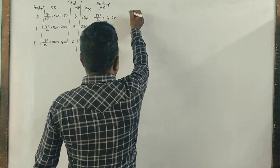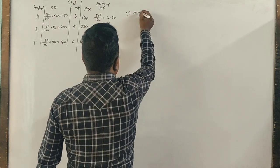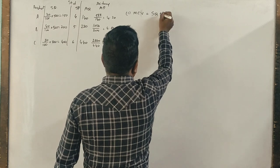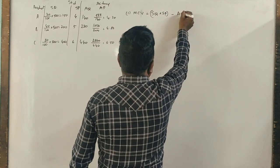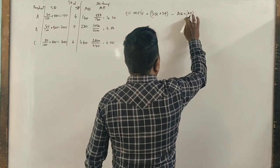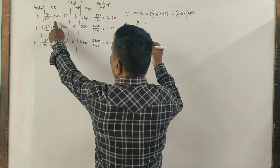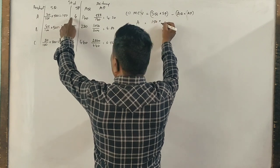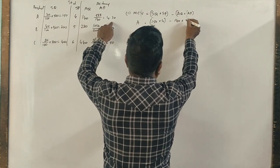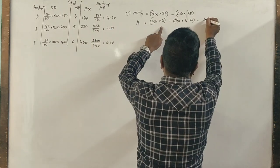Now number one: material cost variance. Material cost variance is standard quantity into standard price minus actual quantity into actual price. Let's see product A. What is the standard quantity? 150. Standard price is 4 rupees minus actual quantity 140. Actual price is 4.2 rupees.